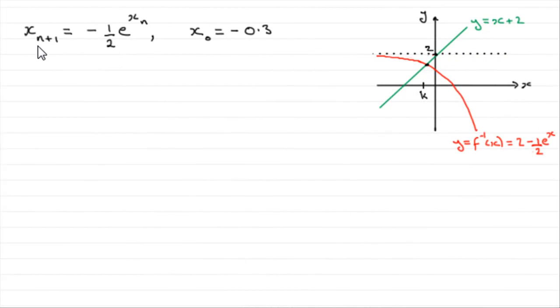Now we're given this iterative formula x subscript n plus 1 equals minus a half e to the power x with a subscript n, and we're given the initial iteration x0 equals minus 0.3. We've got to find the next two values x1 and x2 using this iterative formula.